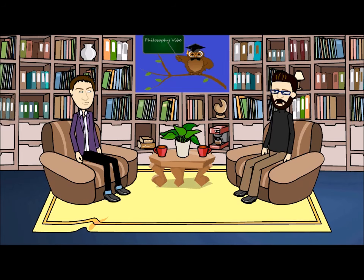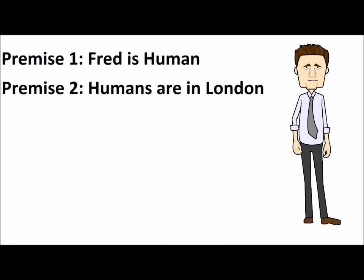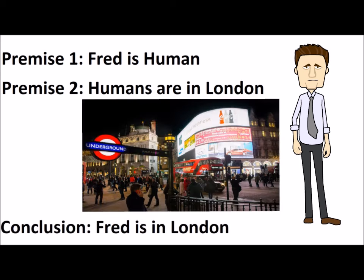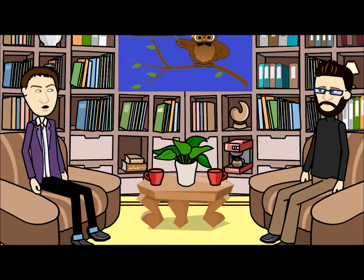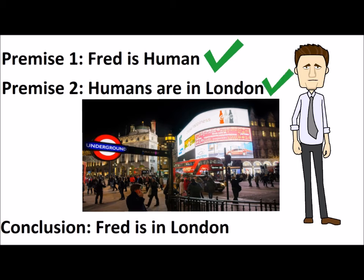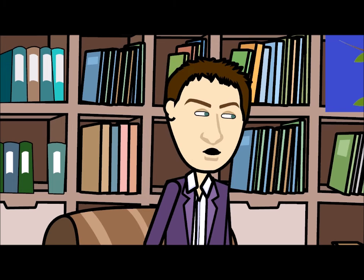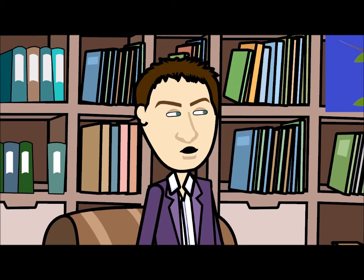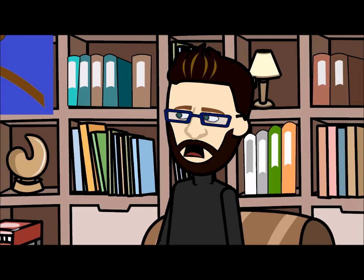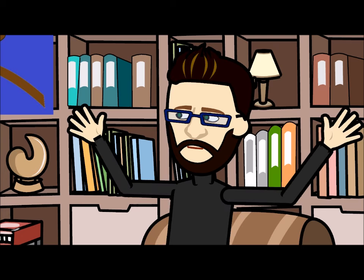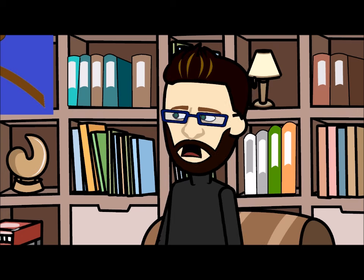Now I will show you an argument that is not sound, but not because the premises are not true. The premises will be true, but the argument will not be valid — the conclusion will not follow the premises. Consider this. Premise one: Fred is human. Premise two: humans are in London. So conclusion: Fred is in London. Here we can see the premises are in fact true — Fred is a human and there are humans in London. Even though the conclusion is true because Fred is in London, the argument is still not sound because it is not valid. The conclusion did not follow the premises. Just because some humans are in London does not mean all humans are in London, and therefore does not mean Fred has to be in London. Just because Fred is a human does not mean he must be in London, as there are billions of humans all around the world. So even though the premises and the conclusion are true, the argument is still not sound.